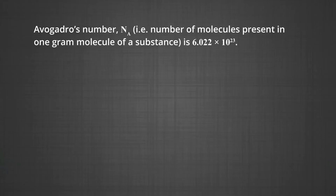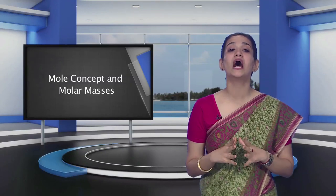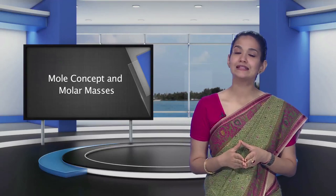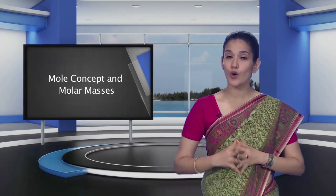Let us now study mole concept and molar masses. Atoms and molecules are extremely small in size. However, Avogadro's number (Nₐ), the number of molecules present in one gram molecule of a substance, is 6.022 × 10²³, which shows that numbers in even a small amount of any substance are very large. To handle such large numbers, a unit of similar magnitude is required.